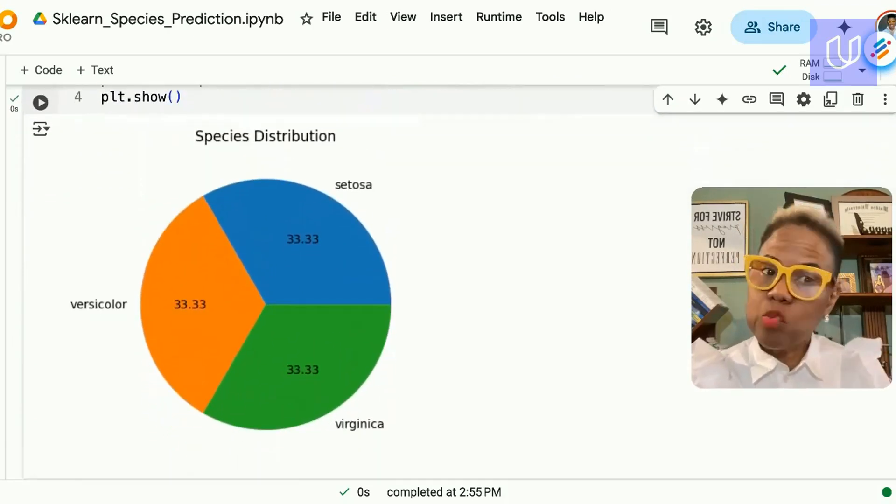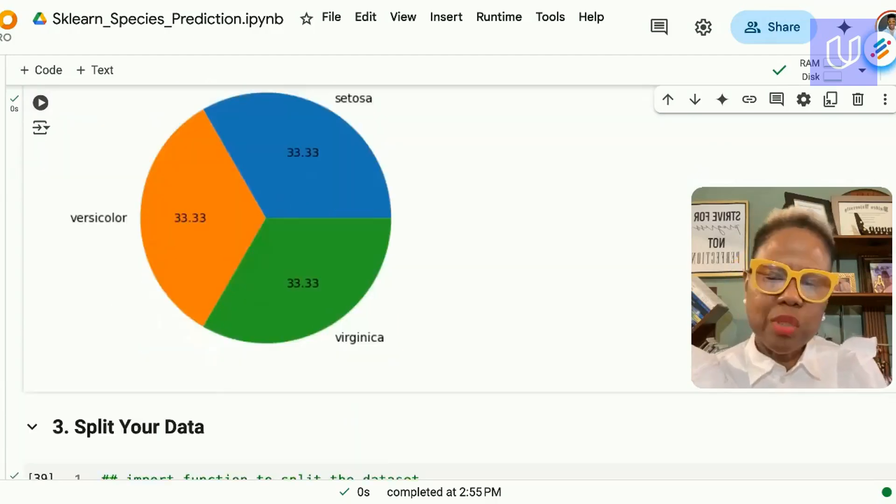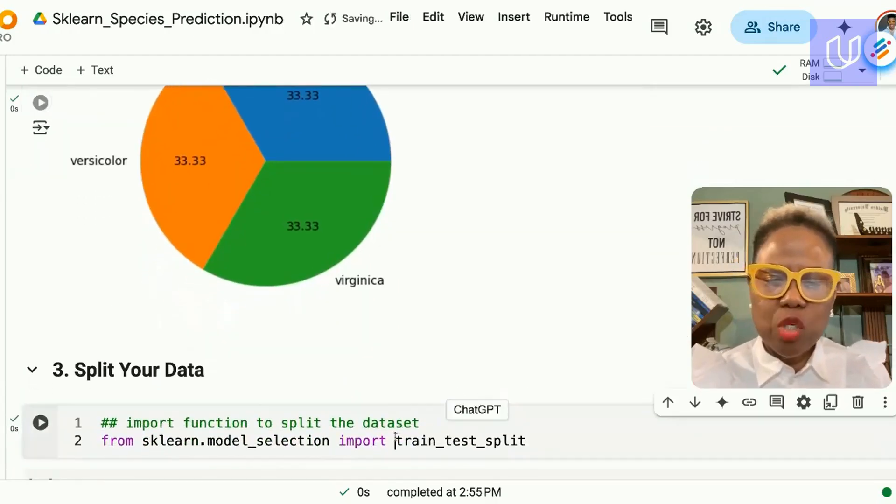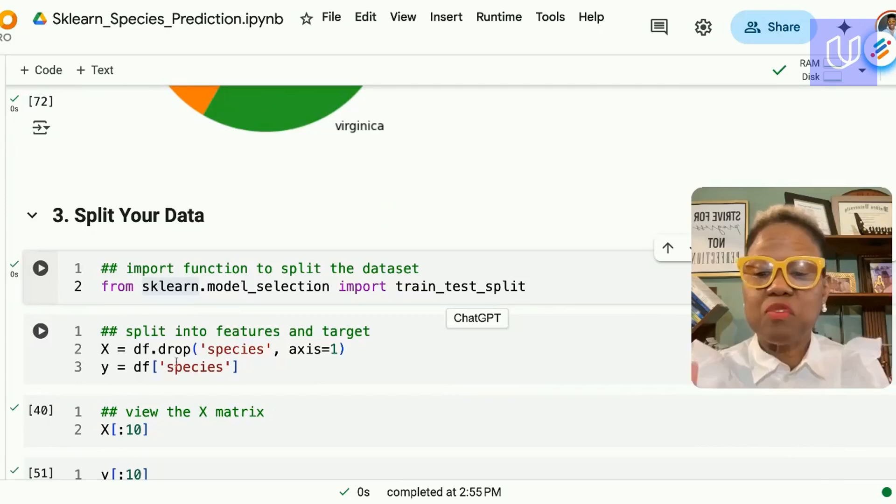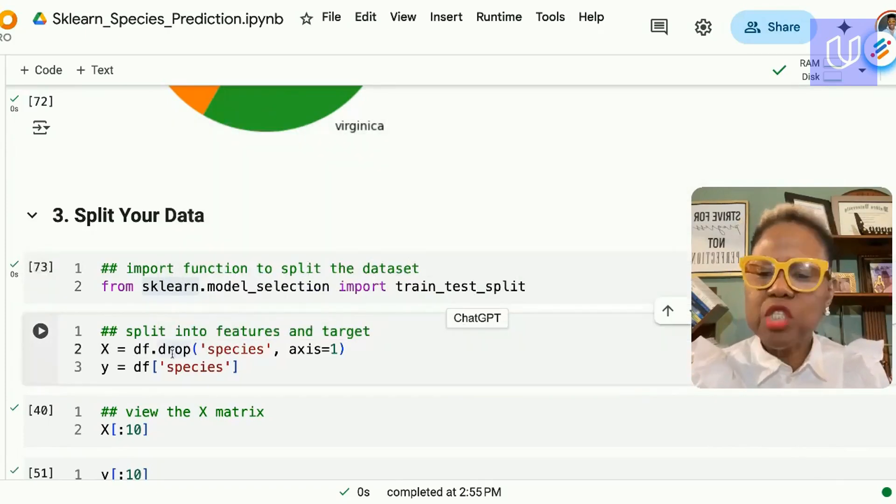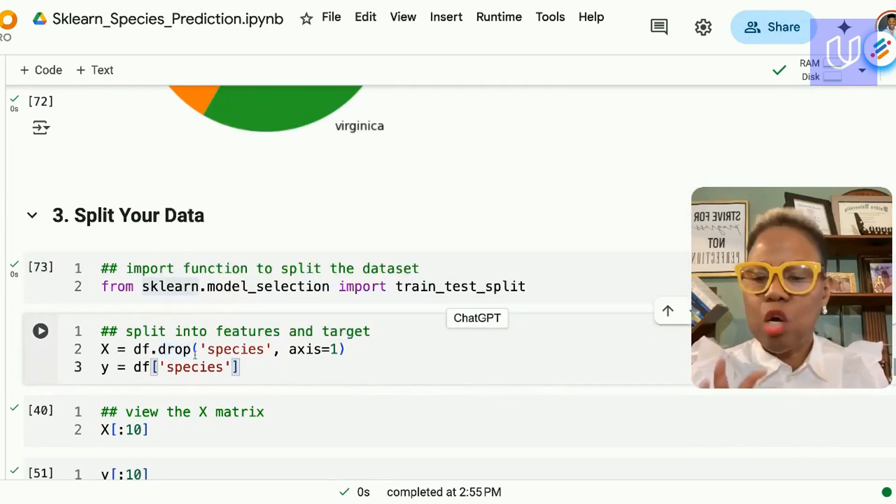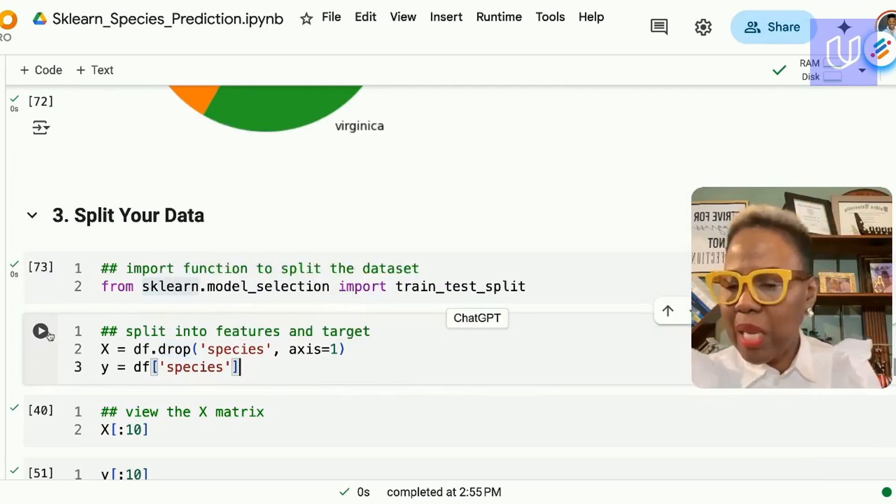Once we have explored our data we get it ready for modeling. The first thing is to split the data and for that we're using the train_test_split function from sklearn. Before the split into train and test we have to split into the features and the target using the drop function to drop the last column from our dataframe and that's assigned to x and then the last column is assigned to y.